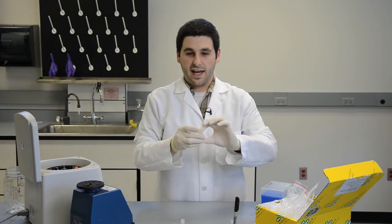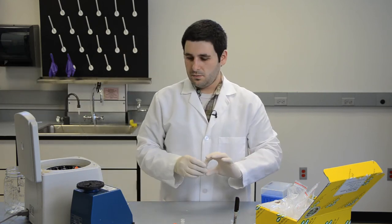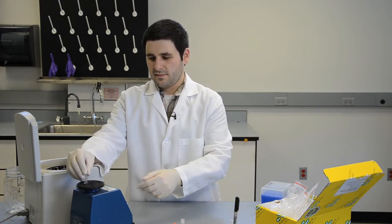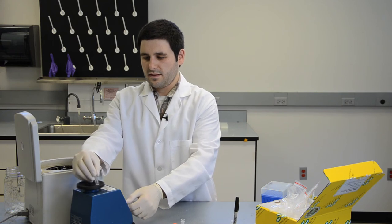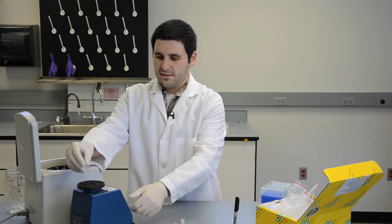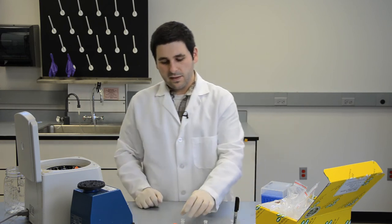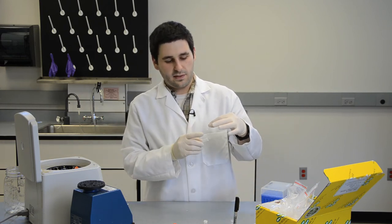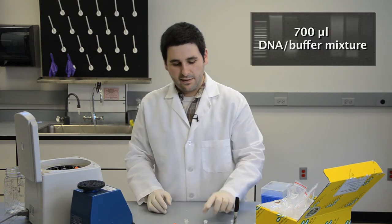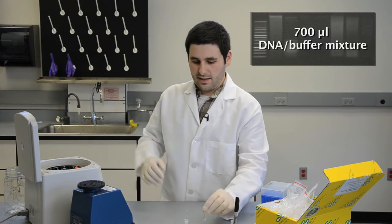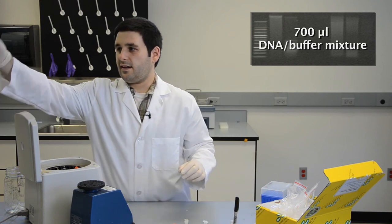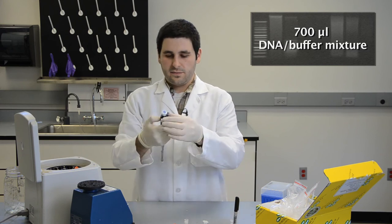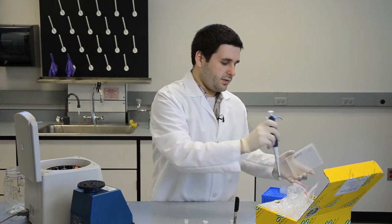After the DNA binding buffer is added to the tube, we want to give it a good vortex. Now, we want to have the DNA bound to the filter. To do that, we need to add 700 microliters of this DNA binding buffer straight to the filter. You need to repeat that until all of it is on the filter.